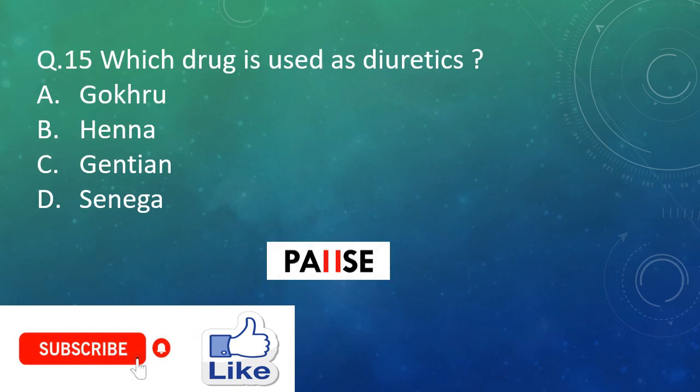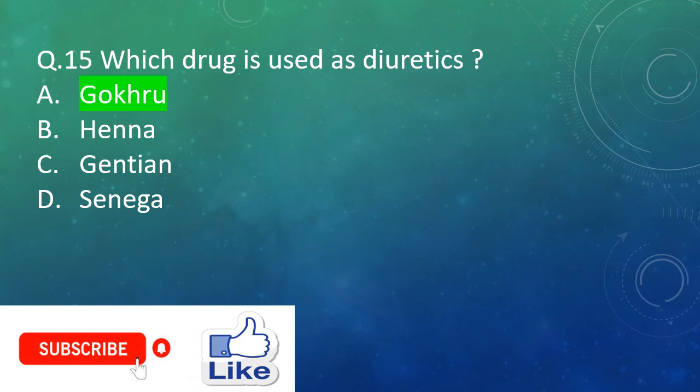Question fifteen: Which drug is used as a diuretic? Option A: Gokru. Option B: Henna. Option C: Gentian. Option D: Gokhru. And the right answer is Option A: Gokru.